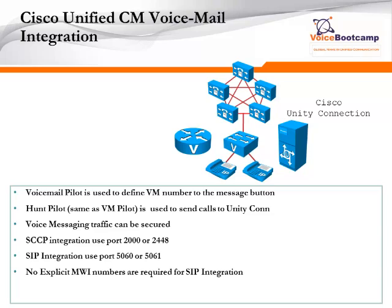Unity Connection integration with Call Manager will depend on the protocols that you use. For example, you can use either SIP or Skinny. When you use a Skinny protocol, it uses TCP port 2000 or 2448. When you're using SIP integrations, it will use port 5060 or 5061. Port 5060 is non-secured SIP integration, whereas 5061 is secured integration.